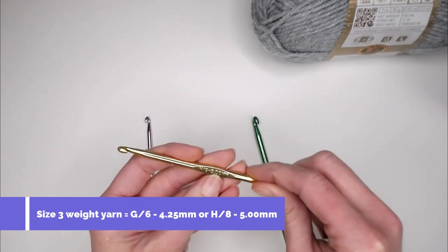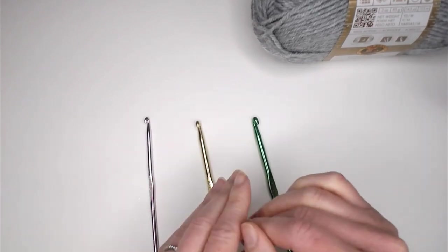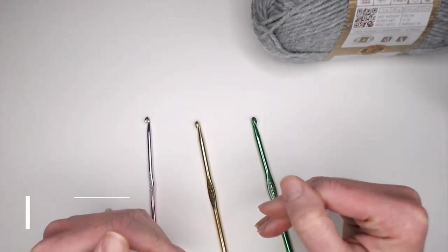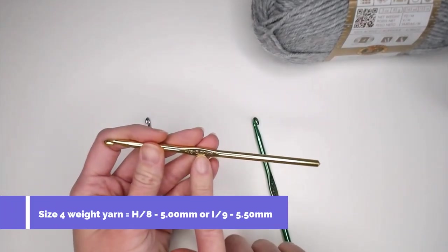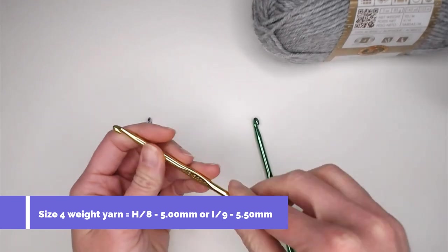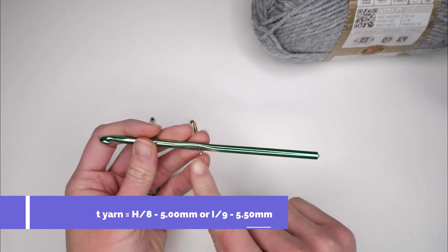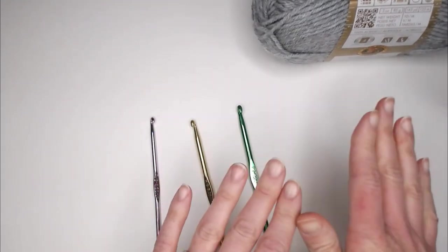You could go up in size for a size 3 weight yarn to a size H8 or 5.00 millimeter crochet hook. If you are going to use a size 4 weight worsted afghan aran 10 to 12 ply yarn, you will definitely want to either focus here on the H8 5.00 millimeter crochet hook, or you could potentially go up to an I9 or 5.5 millimeter crochet hook.